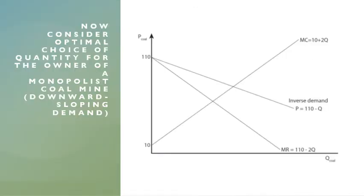Now let's consider the optimal choice of quantity for the owner of a monopolist coal mine with a downward sloping demand curve. We have a demand curve and our marginal revenue curve — remember that the marginal revenue has twice the slope of the inverse demand curve — and we have the same marginal cost curve as before. Let's say the producers are monopolists, a producer in Wyoming supplying coal to the general mountain region.